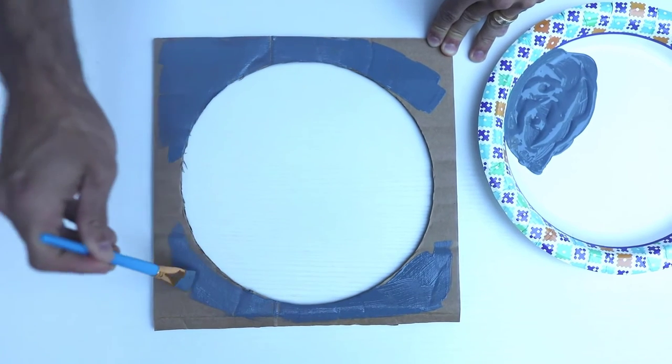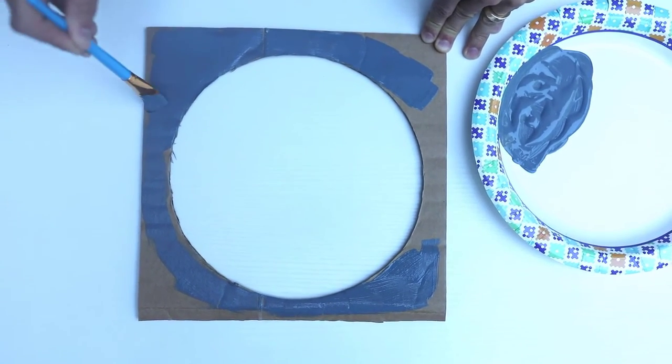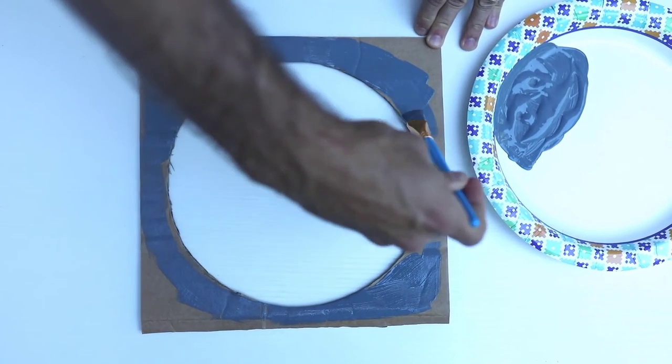Now that we have the cutout and we have the paint, go ahead and slather it on. Make sure that all of the cardboard is covered, and we'll let that dry overnight.